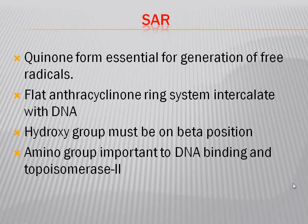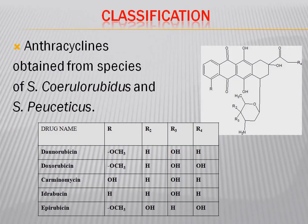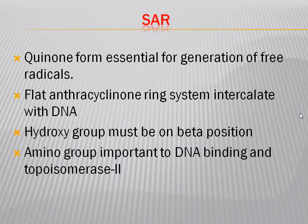Coming to the structure-activity relationship: the quinone form is essential for the generation of free radicals. Ring B consists of two ketonic groups, and this is the quinone form of the anthraquinone ring. This quinone form is essential for the generation of free radicals.